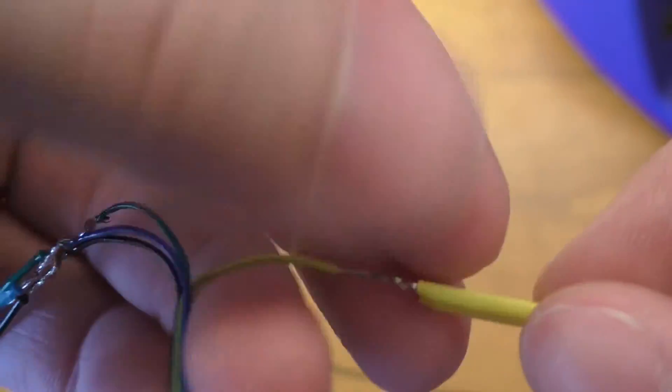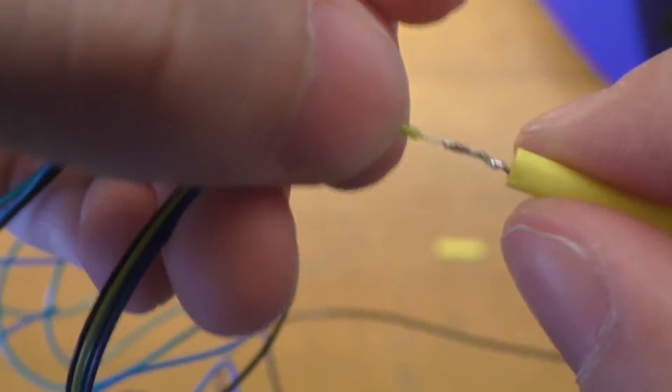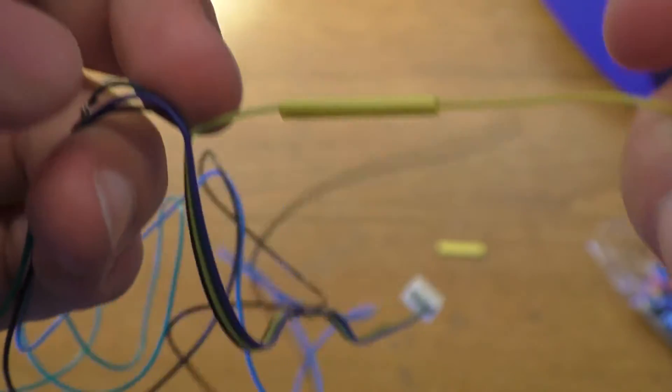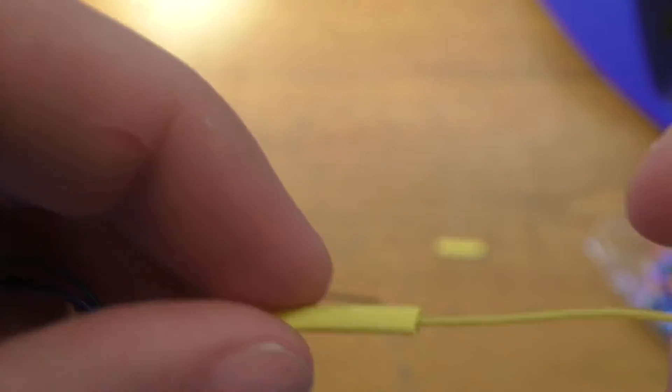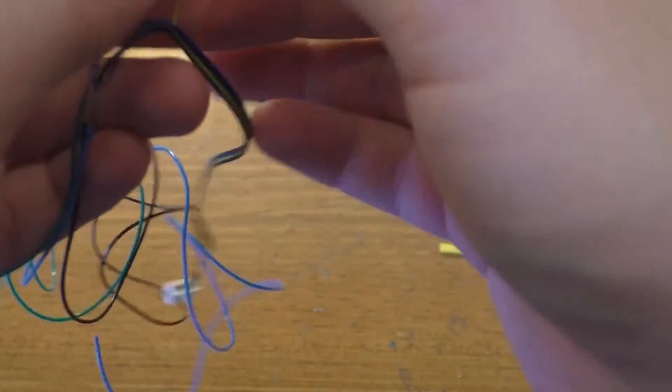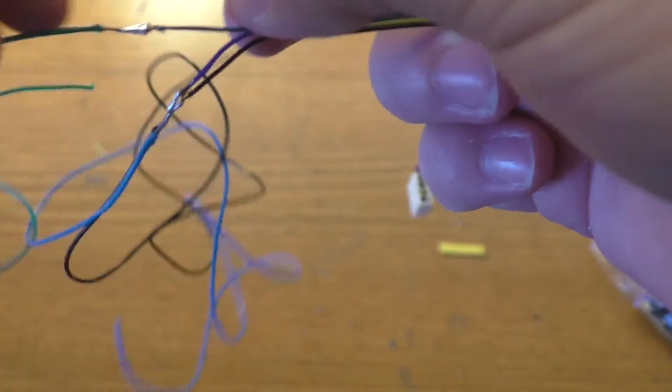And it should be able to cover the entire solder joint there when that gets slid over. And hopefully it doesn't get caught in anything in the process there. There we go. So it'll be just like that. We'll just have to shrink that down. I'll go ahead and cut the rest of the pieces of heat shrink up first though.